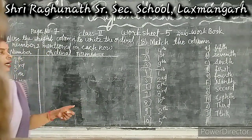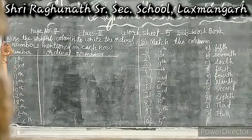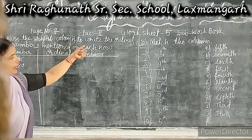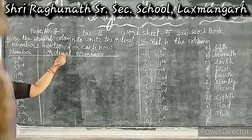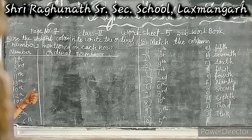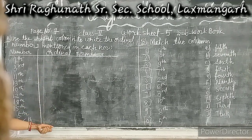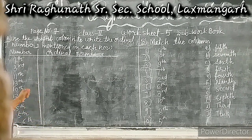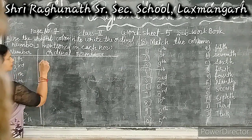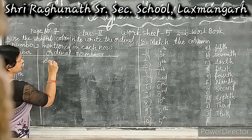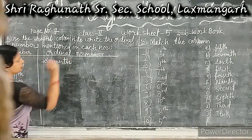Question number A is: use the right column to write the ordinal numbers mentioned on each note. When we give the ordinal numbers, we can write the ordinal name or we can write the ordinal number. For example, first we can write the ordinal number 7, and we can write the ordinal name 7th.